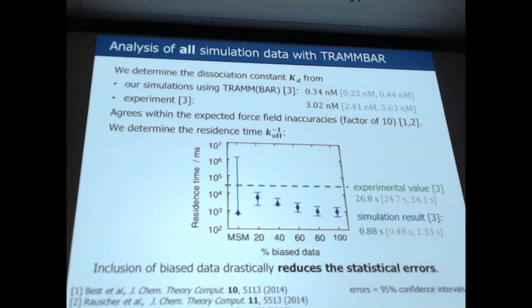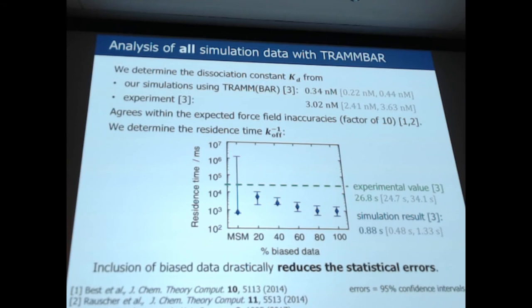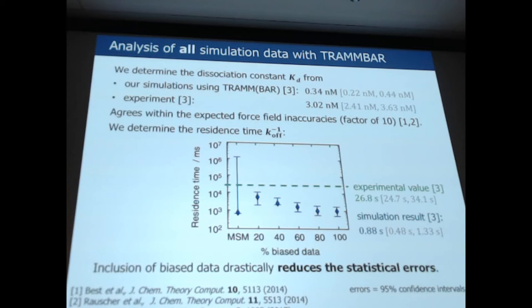But more importantly, we get to compute the residence time of the peptide in the binding pocket of the protein. And we find a value of 0.88 seconds compared to an experimental value of 26.8 seconds, which is not too bad for an MD simulation. Let me explain this graph a little bit to you. Here on the y-axis, I'm showing the residence time, and on the x-axis, I'm showing the amount of biased data that has been used for estimating the model. So 0% of biased data means that we estimate a normal MSM which doesn't include any biased data from a free energy calculation, such as conventional dynamics. And there you see that the result is somehow in the right ballpark, but the error bars are so extreme that the result is practically useless. Only by including a little bit of biased data is enough to reduce the error bars dramatically and to converge at a result which is not too far from the experimental value.